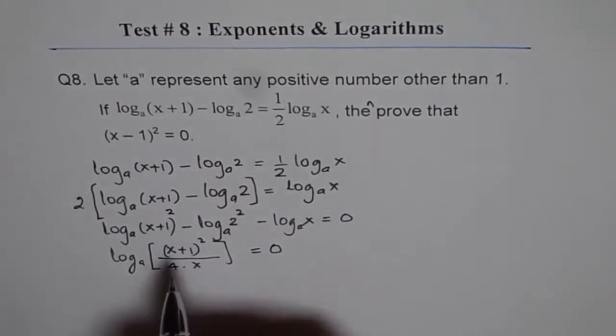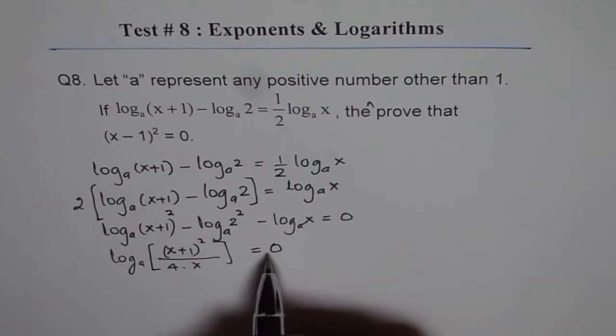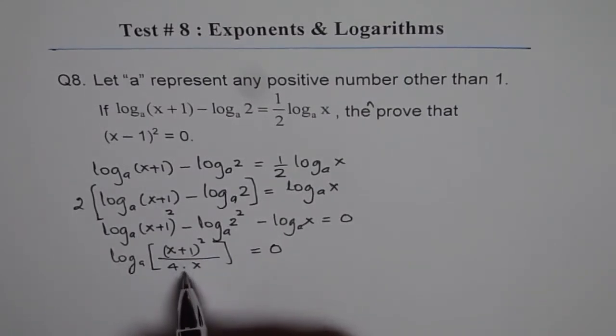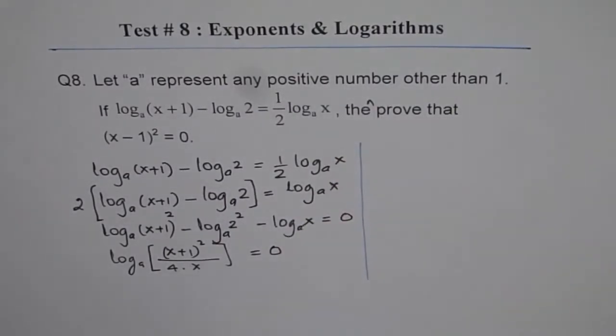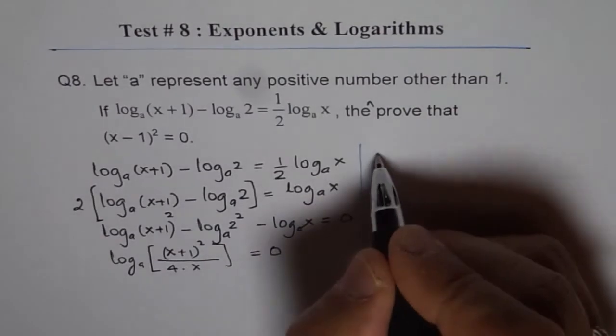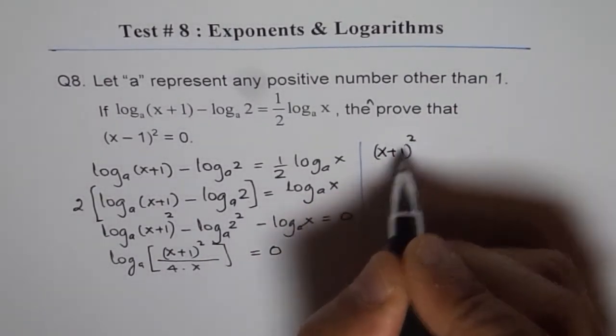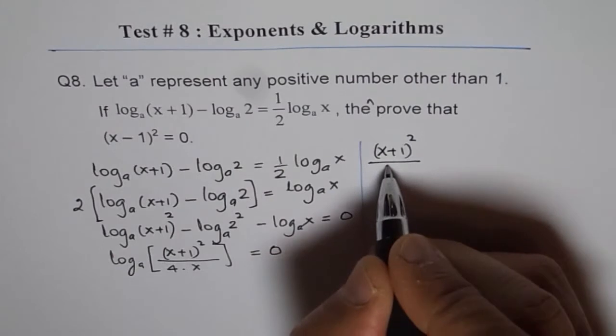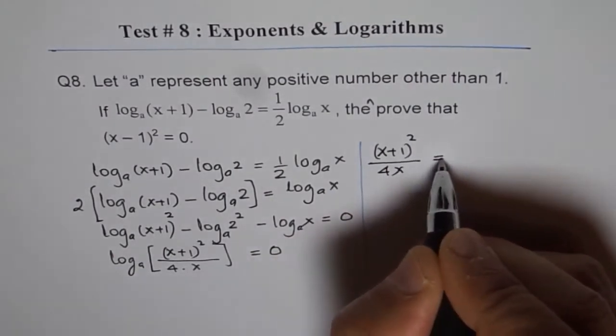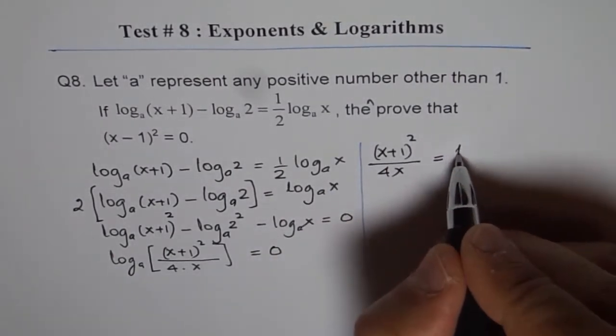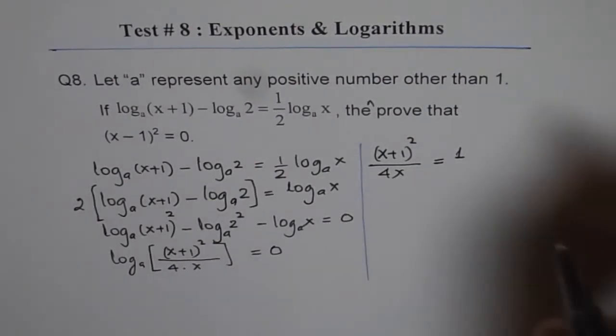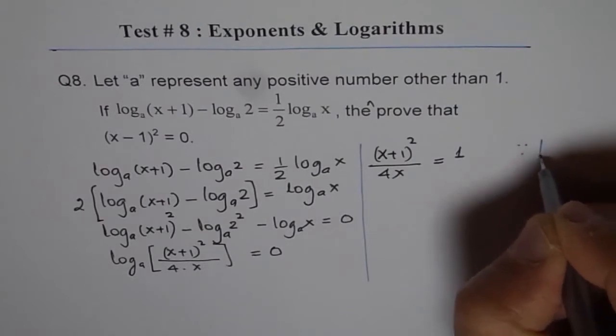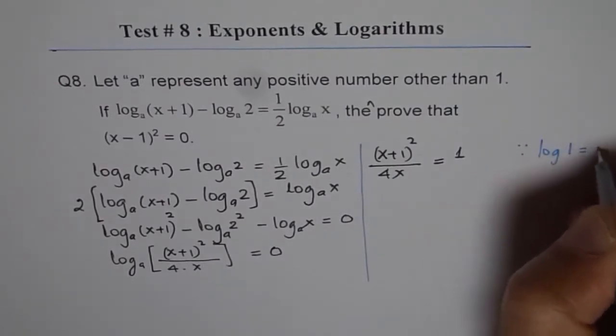Now if this is 0, it really means that log of 1 is 0. Therefore we can write this as, let me take it on this side, x plus 1 whole squared over 4x is equal to 1, since log of 1 is 0. Therefore this should be equal to 1.